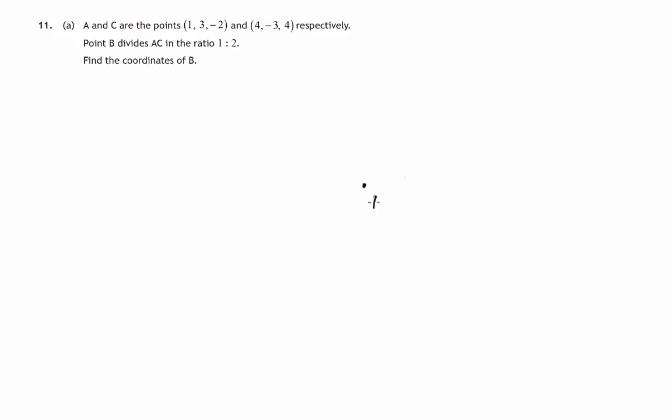So there's point A and point C: (1, 3, -2) and (4, -3, 4), two points in space somewhere. And the line joining them is divided by point B, so that's one bit, and this length will be two bits, the ratio 1 to 2. And we're asked to find what point B is.